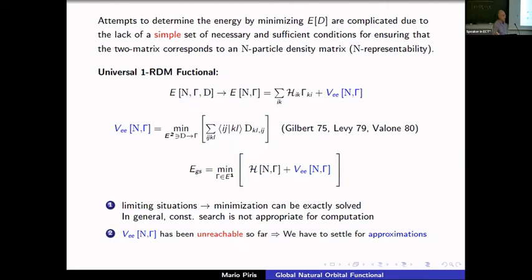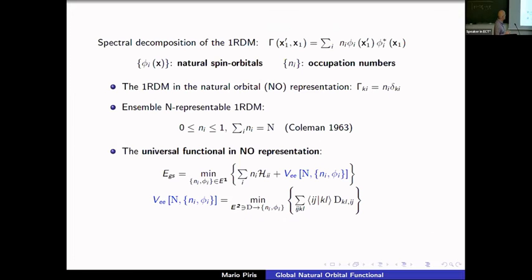In the 1970s it was suggested to substitute the electron-electron part of the energy — which is a functional of the two-particle matrix — by an unknown functional of the one-particle matrix: the electron-electron functional shown here in blue. Gilbert (1975) for pure states, and Levy, Nátar, and Valone for ensemble states, demonstrated you can obtain this functional via a constrained-search formalism.